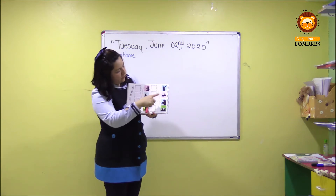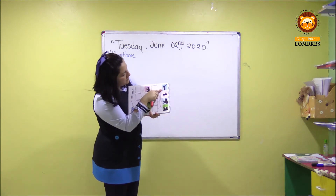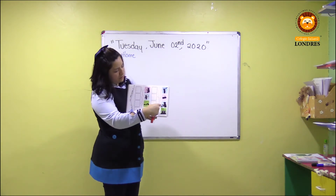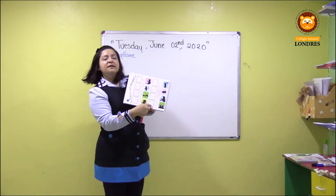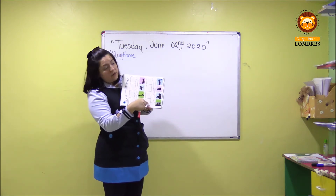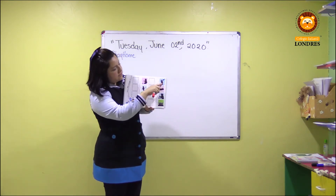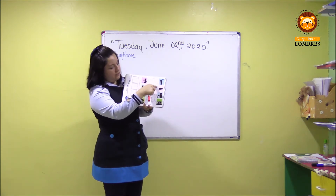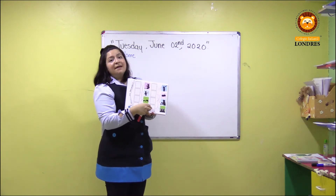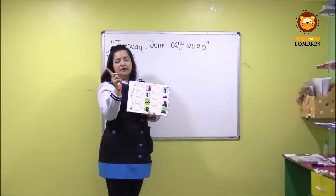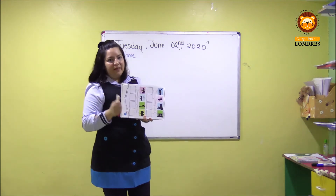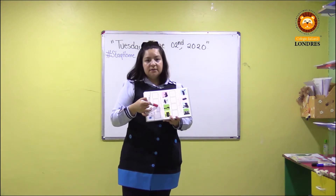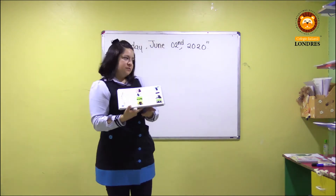Para que no se vayan a equivocar: si me voy en la segunda columna, y mi línea, fíjense muy bien, mi línea marca de aquí todo derecho hasta el recuadro que está en la parte de abajo, entonces nos dice: he is taking a shower, que está tomando un baño, para que coloquen correctamente el sticker y no se vayan a equivocar. Deben de ser muy cuidadosos, seguir correctamente las líneas y colocar el sticker que corresponde.